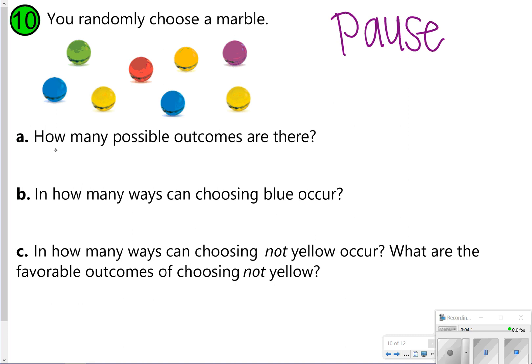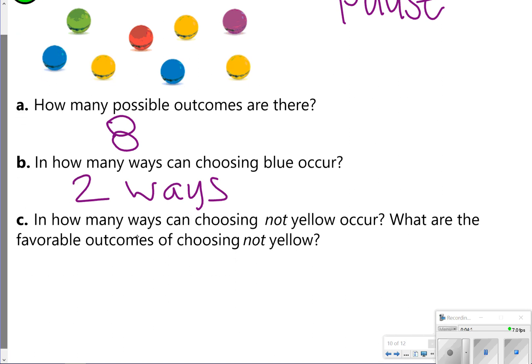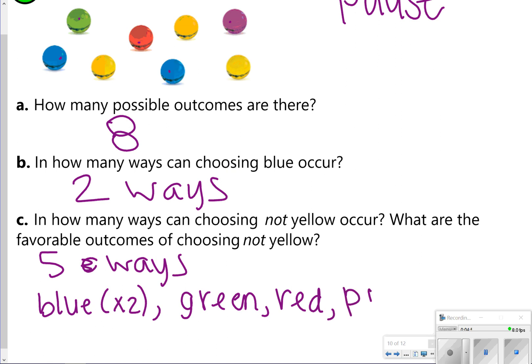So in letter A, how many possible outcomes are there? There are one, two, three, four, five, six, seven, eight possible outcomes. In letter B, in how many ways can choosing blue occur? There are two ways that you can choose blue. In letter C, in how many ways can choosing not yellow occur? Not yellow would be one, two, three, four, five ways. What are the favorable outcomes of choosing not yellow? Okay. There are blue times two. There's a green, a red, and a purple. So that's one, two, three, four, five ways.